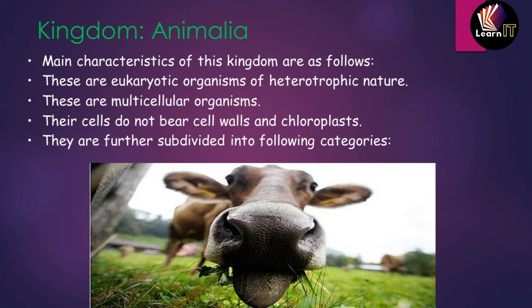Kingdom Animalia is further divided into different phyla: Porifera, Coelenterata, Platyhelminthes, Nematoda, Annelida, Arthropoda, Mollusca, Echinodermata, Protochordata, Vertebrata, Pisces, Amphibia, Reptilia, Aves, and Mammalia. These are some of the further divisions within kingdom Animalia.